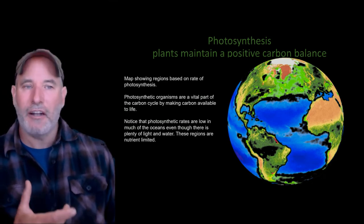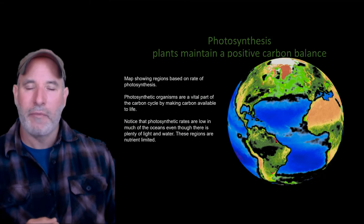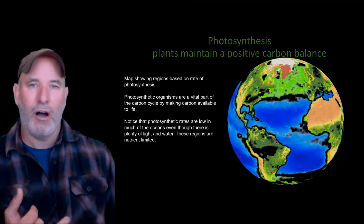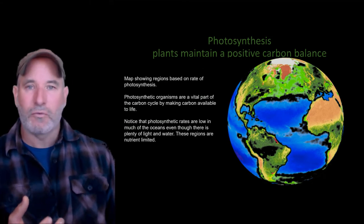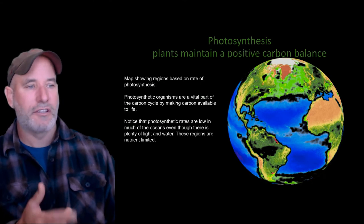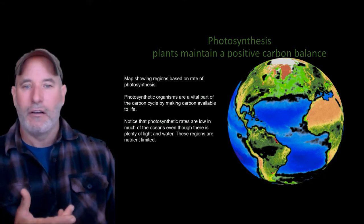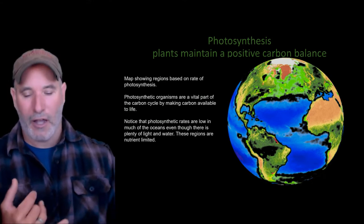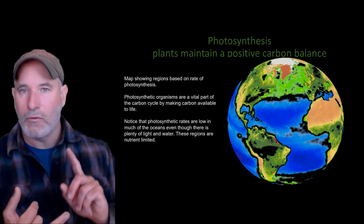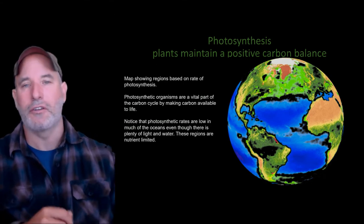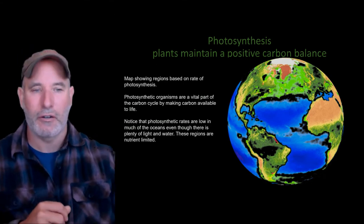Looking at photosynthesis rates across the planet, they're low way out in the middle of the oceans — plenty of sunlight and water, but nutrient limited. The Sahara is totally water limited. You need light, water, and nutrients for photosynthesis to occur.